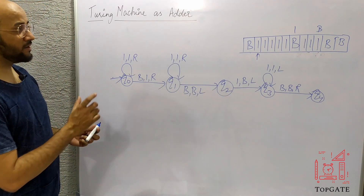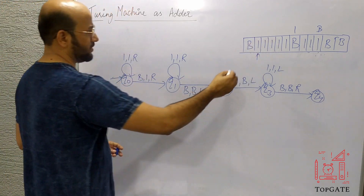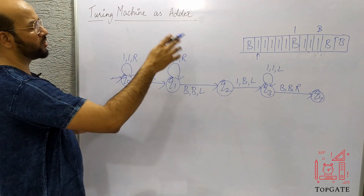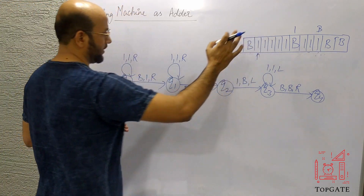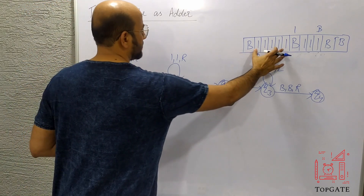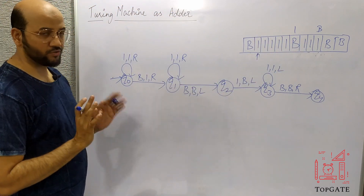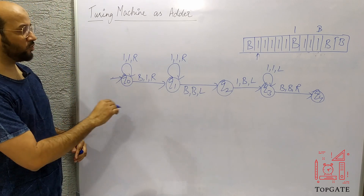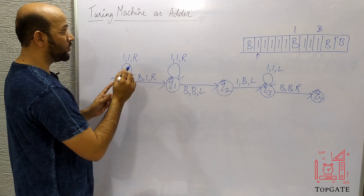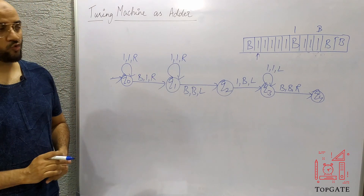This is the Turing machine acting as an adder, adding two numbers in unary form. Since the input tape has infinite cells, we can load any unary number — one lakh, two lakh, or more — and it will perform the addition easily. This machine is a transducer because it converts a string from one form to another, and therefore there is no final state.